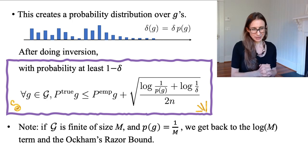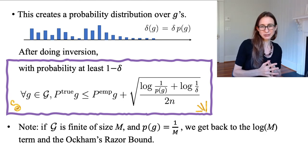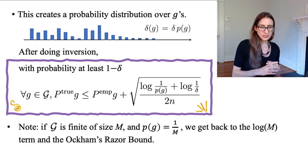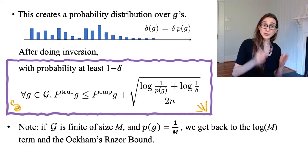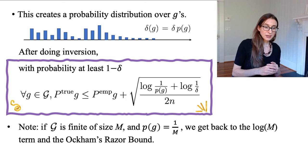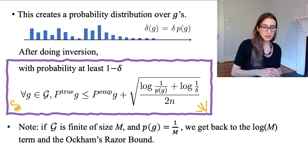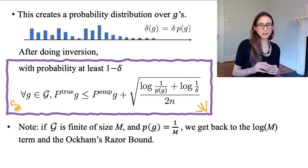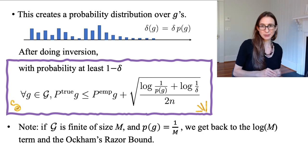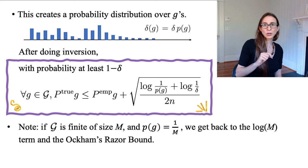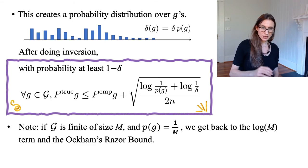Now an interesting thing about this bound is that it's strictly more general than the Occam's Razor bound that we talked about before, because if the number of functions is actually finite and if we had set all of the P(g)'s to 1 over M, then we get back exactly to the log M term that we had before in the Occam's Razor bound. Because what you get is log of 1 over P(g), and it would be 1 over 1 over M, which is log of M, so you get exactly the same terms you had in the Occam's Razor bound.